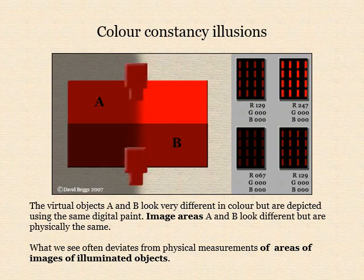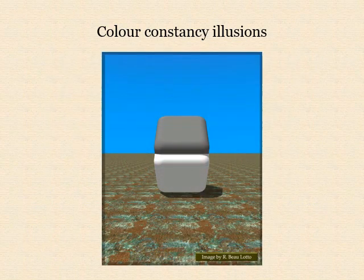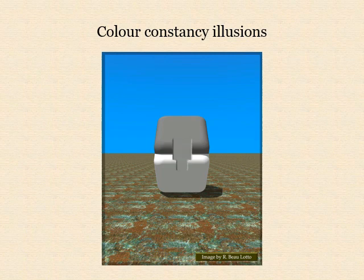It's crucial to note that we do not need to isolate the physically identical image areas to see them as matching in colour — we just need some help to attend to the image colours and notice these as matching. To do this we must in some way break the representational spell of the image, as in this case by providing a reference seen as being outside the illumination depicted in the image. What seems to be happening is that we find the perceived colours of the virtual objects depicted in these images so visually insistent that it's very difficult to attend to and compare colour perceptions relating to the image areas themselves.